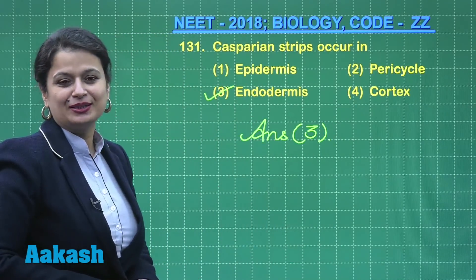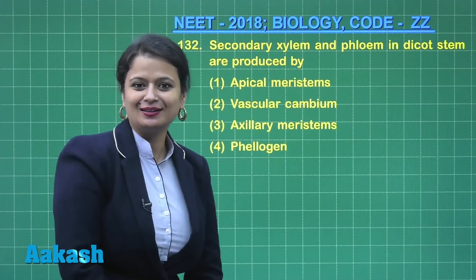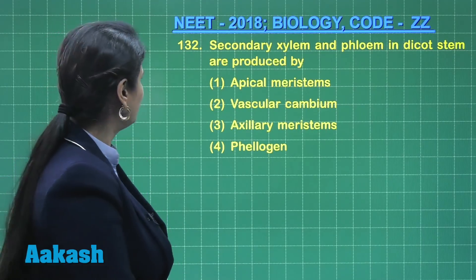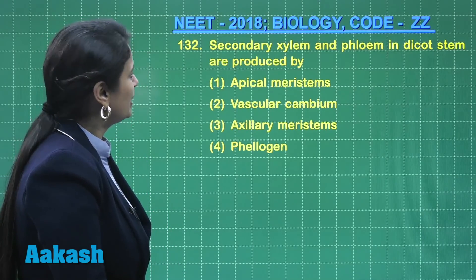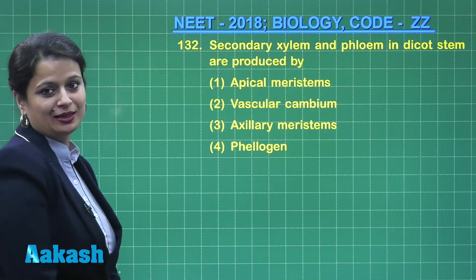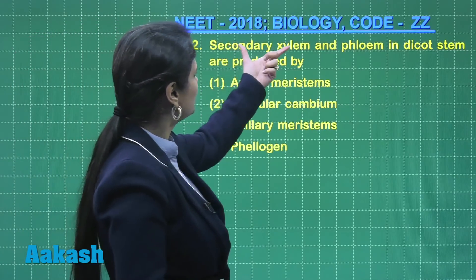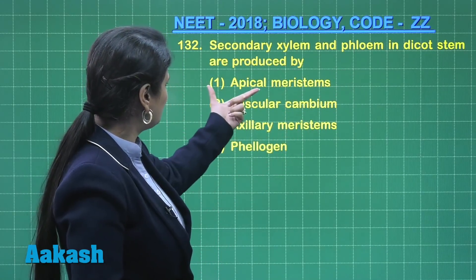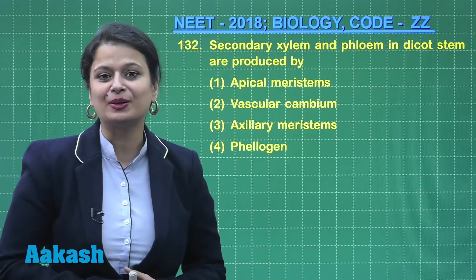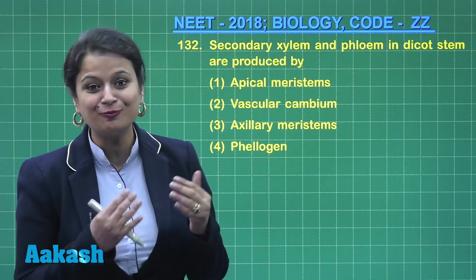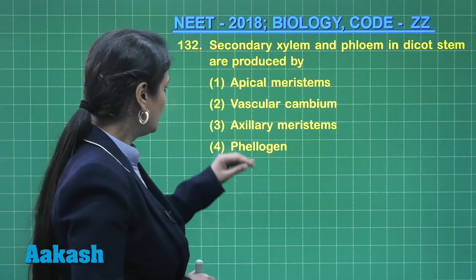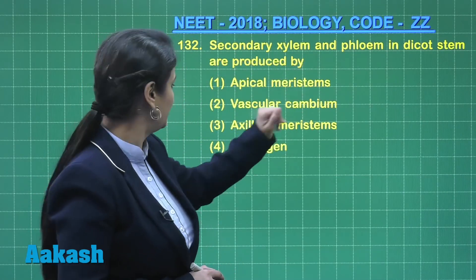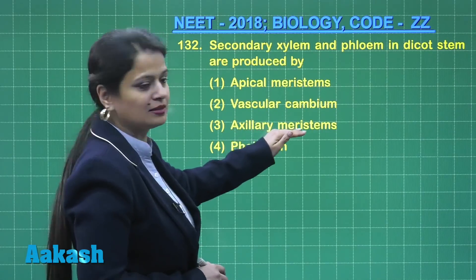Question number 132 is from the topic anatomy of flowering plants: secondary xylem and phloem in a dicot stem are produced by — these are secondary permanent tissues formed by vascular cambium. Apical meristem is involved in the formation of primary permanent tissue, so it is out of the scenario. Vascular cambium forms secondary xylem and secondary phloem. Axillary meristem is also involved in primary permanent tissue formation.